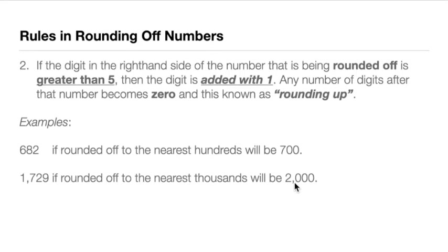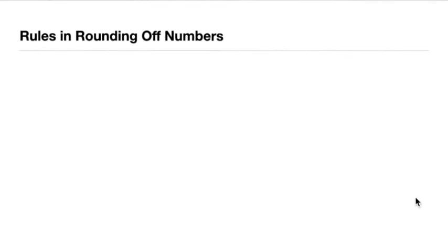If the rule says the digit to the right is greater than or equal to 5, we call that the traditional rule. But there is also the banker's rule, which will be our third rule.